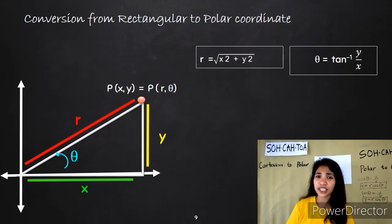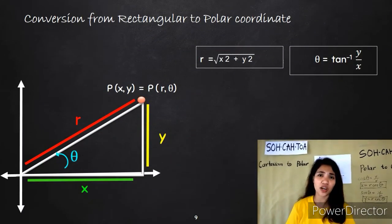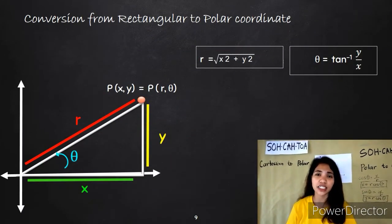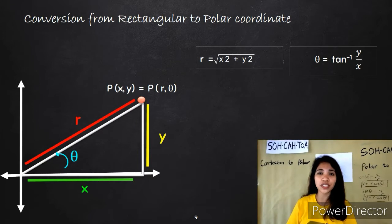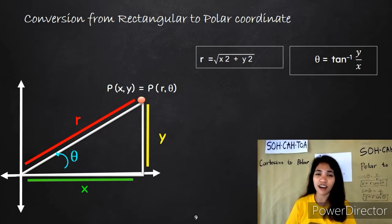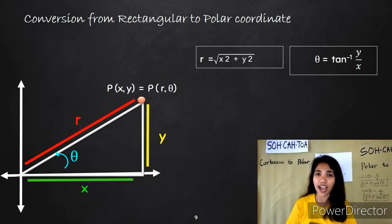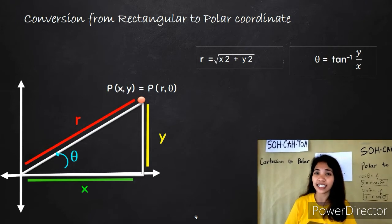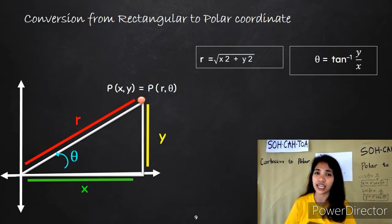In converting Cartesian to polar coordinates, we also need two formulas. First, r is equal to the square root of x squared plus y squared, and θ is equal to the inverse tangent of y over x.